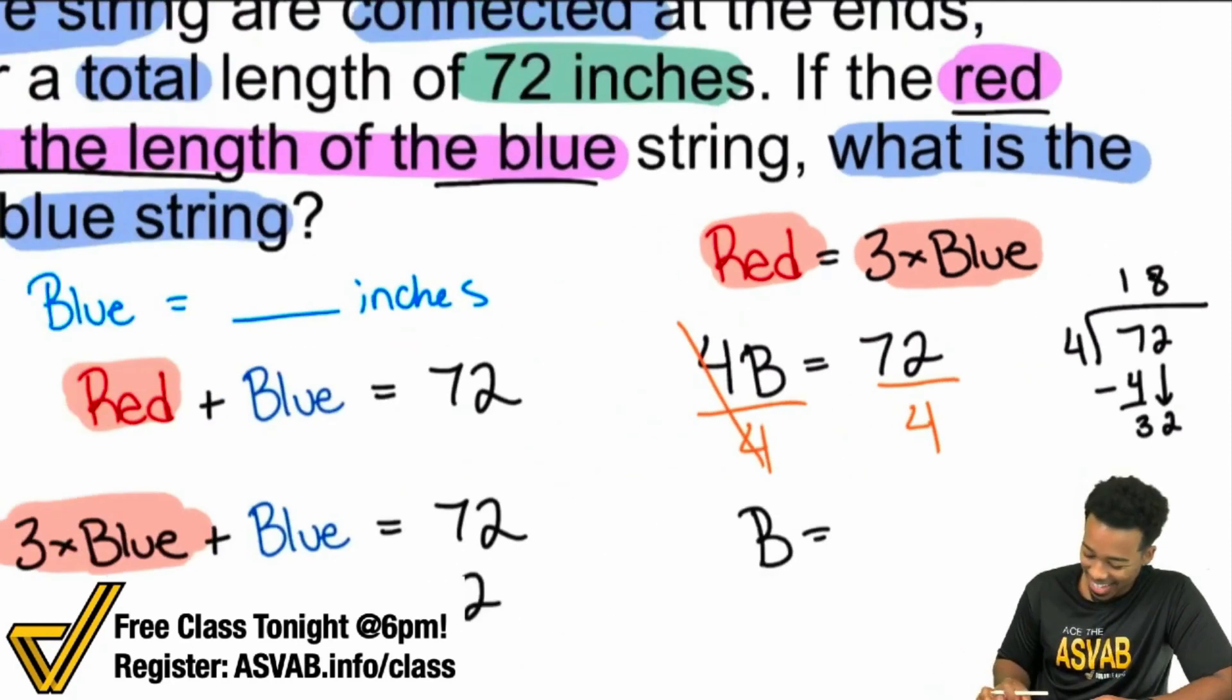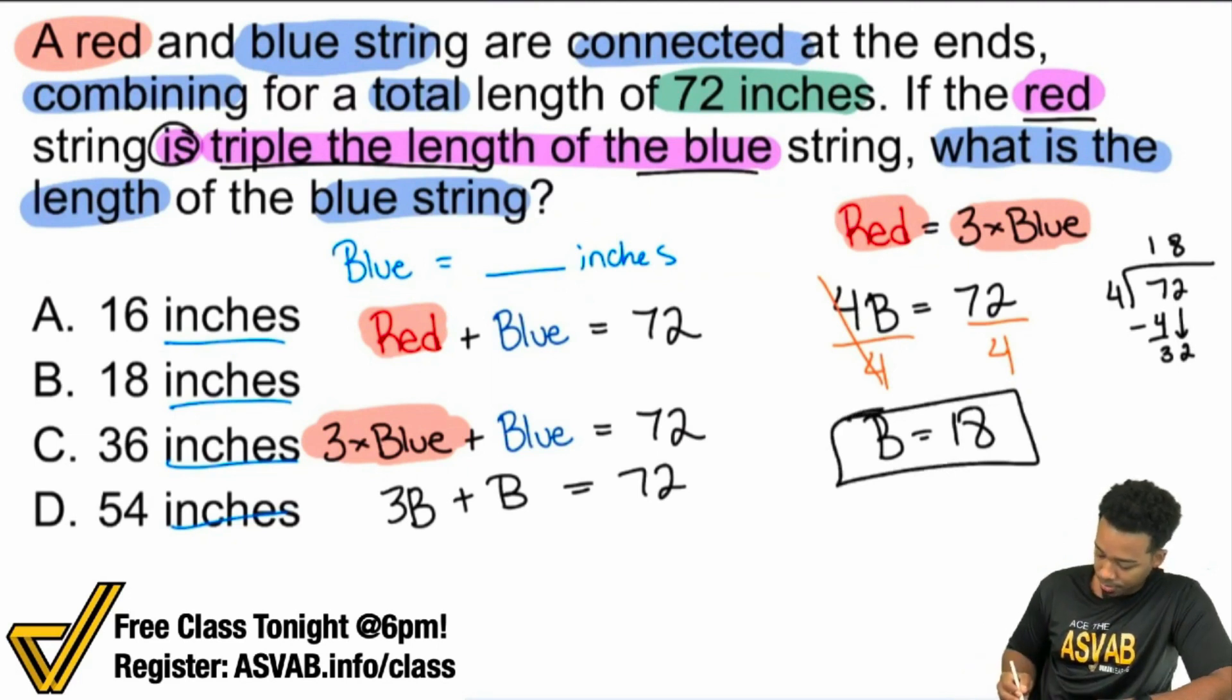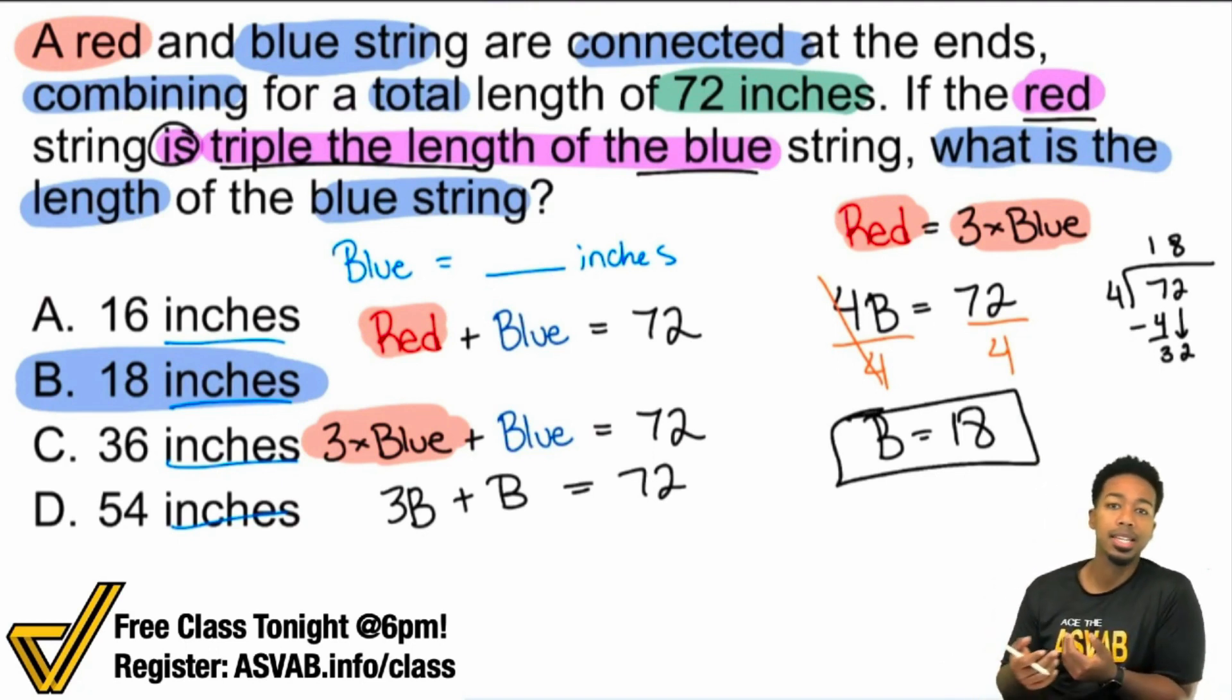And so with that said, we're back over here. We have B equals 18. And so there it is. The blue string is 18 inches. And if you wanted to check your work, you absolutely can because it says that the red string is three times as long. So 18 times three is 54. 54 plus the 18 of the blue gives us 72 again.